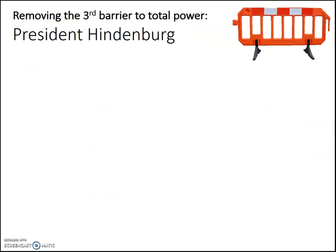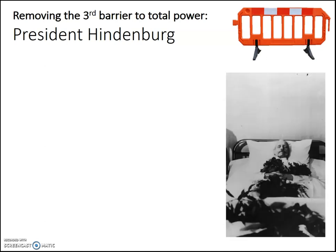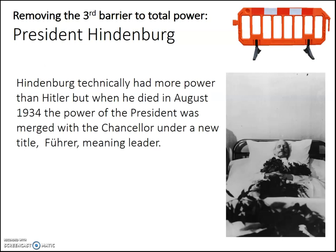That final barrier was President Hindenburg. In the German system until 1934, President Paul von Hindenburg — a very famous First World War general — actually had more power than Hitler. In 1934 he started to get ill, and then in August of 1934 he died. The very next day, Hitler decided to merge the position of President with his own post of Chancellor under a new title — Führer, a German word meaning leader. By August of 1934, Hitler was the true Führer, the true leader of Germany, and had complete total power.